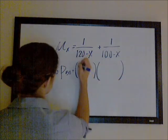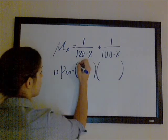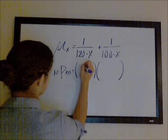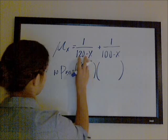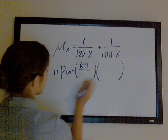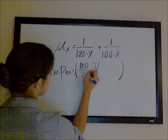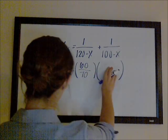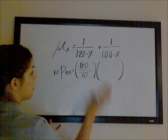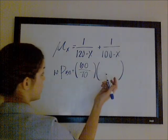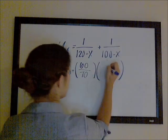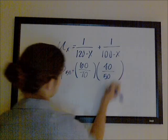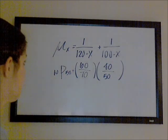The first 10P50 is going to be 120 minus 50 minus 10, which is 60, over 120 minus 50, which is 70. And the second 10P50 is going to be 100 minus 50 minus 10, which is 40, over 100 minus 50, which is 50.